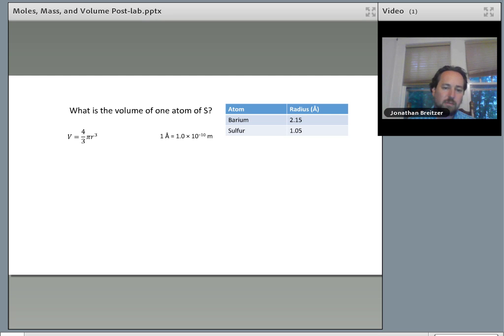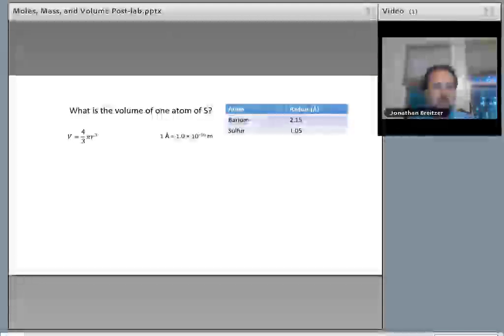They give the angstrom, which is symbolized by the A with a ring on top, as 1 times 10 to the minus 10 meters. They also give the formula for the volume of a sphere: four-thirds pi r cubed.